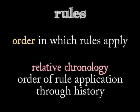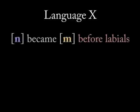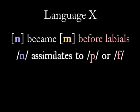Let's imagine a simple human language — we'll give it a cool name like X. Language X underwent two minor sound shifts. In the first shift, N became M before a labial consonant; this language has the labials P and F. In other words, N assimilates to a following labial.